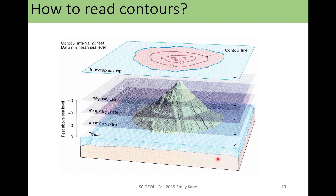So how do you read contours? You can think of them as different planes. The zero feet would be this outer circle — so we have an island because here is underwater. The elevation keeps increasing: we go from zero to 20 to 40 to 60, which means the top of our mountain here is going to be somewhere over 60 feet but not quite 80 feet, or we would have had to draw another circle. Because these are spaced every 20 feet apart, we would have to have an 80 because it's always a constant interval.